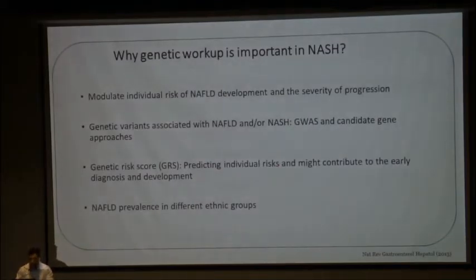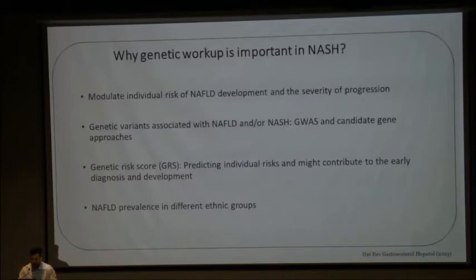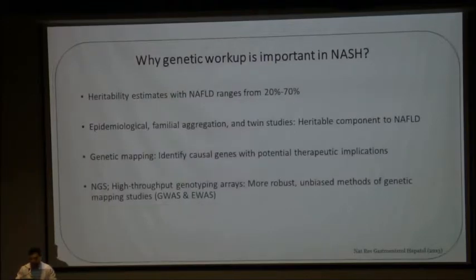Why is genetic workup important in NASH? It basically modulates the individual risk of NAFLD development and severity of progression. Multiple genetic variants associated with NAFLD and NASH are identified using genome-wide association studies and candidate gene approaches. The genetic risk score or polygenic risk score helps in predicting the individual risk and might contribute to early diagnosis. There is a varying prevalence of NASH in different ethnic groups. The heritability estimate of NAFLD ranges from 20 to 70%, and multiple epidemiological, familial aggregation, and twin studies have shown a heritable component to NAFLD.